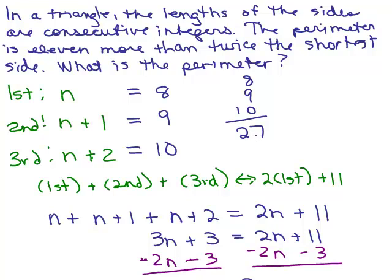So we're wondering if that's really true. Is that the perimeter? Is 27 the perimeter, is that 11 more than twice the shortest side? Well, the shortest side is 8. What's twice the shortest side? 16. And if I add 11, I get 27. That makes sense.